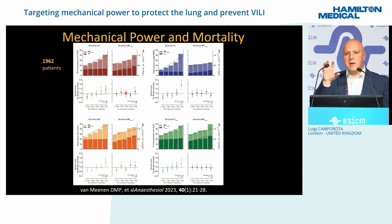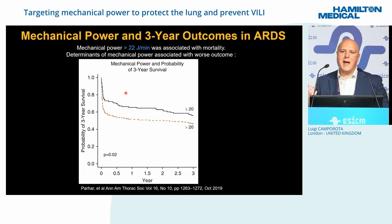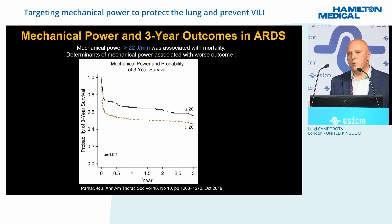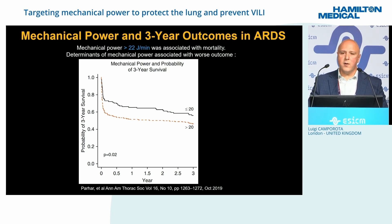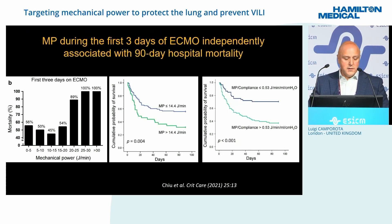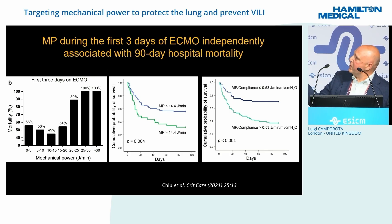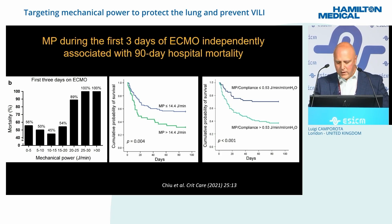This is not just a short-term problem: data from three-year follow-up show that patients with high mechanical power greater than 20 to 22 joules per minute have worse outcomes even three years later compared to those who had less energy delivered to their lungs. Even in patients receiving ECMO — potentially the most lung-protective situation — there is a threshold where higher mechanical power is associated with worse outcomes compared to patients with lower mechanical power.